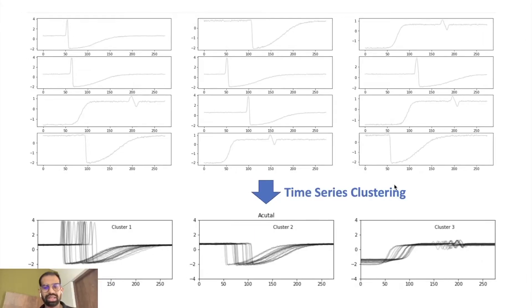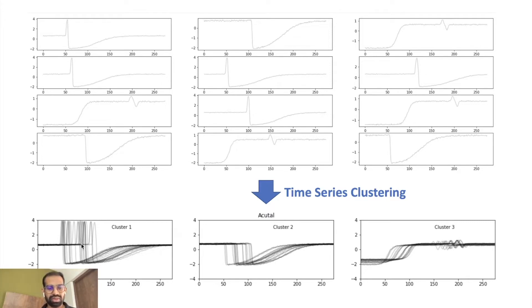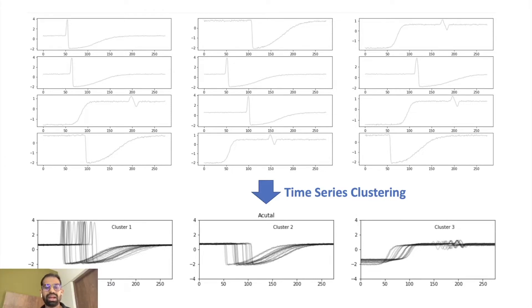So let's jump into it. Let us see what time series clustering is. From this slide at the top, we can see there are multiple time series which we can group using time series clustering into three clusters based on similarity of patterns. We can see each cluster has similar-looking time series. But the question here would be: how do we define similarity of time series?